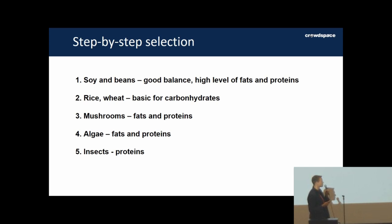Here is how we selected the food that should be grown. The major deficit that we'll have on Mars is deficit in fats, and that's why we have to use more food that has fats inside. The leader here is soy and beans—they provide good levels of fats and proteins. The major part of carbohydrates will be covered by rice and wheat. Mushrooms look good for fats and proteins. Algae is also good, and finally insects will give us animal proteins.